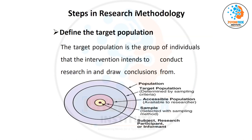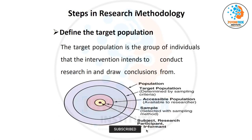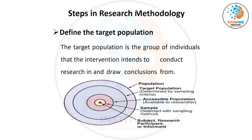From this target population, you are going to collect the sample, because we are not going to include all the target population. See this hierarchy: the overall population is the bigger circle. Out of that overall population, some are eligible for you — that is your target population. Out of that target population, what is feasible and accessible for you is your accessible population, and out of that accessible population, you are going to collect the sample.